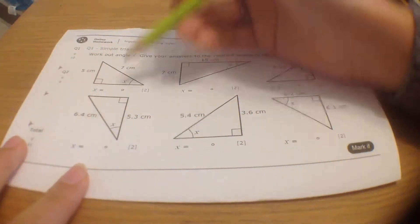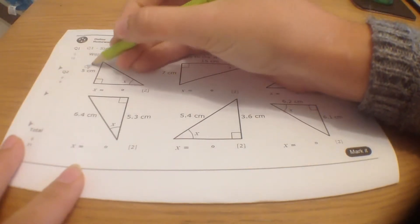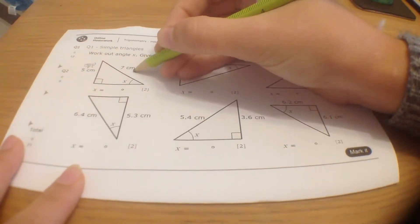So for my first triangle here, this is my angle. So this 5 is the opposite, and 7 is the hypotenuse.